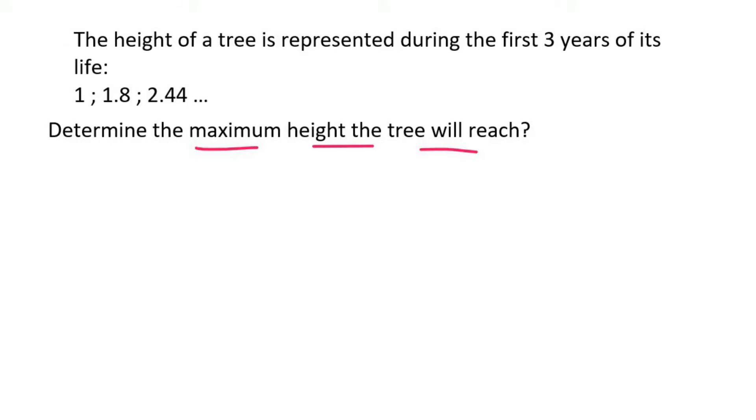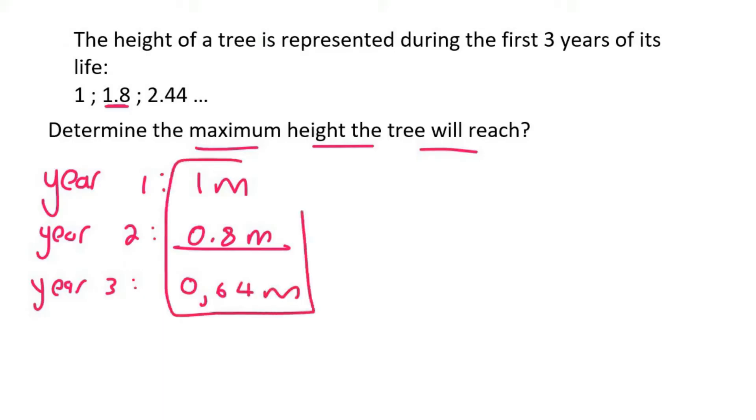So in year one, tree grows one meter. In year two, the tree grows 0.8 meters. So that's after two years, it will be 1.8 meters tall. In year three, it grows 0.64 meters. Because if you add these three together now, you would get 2.44.